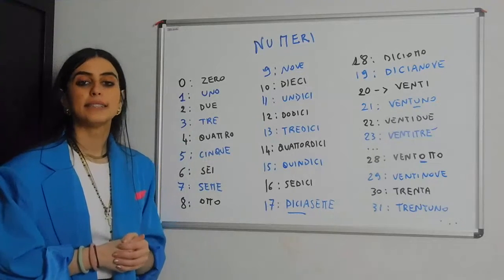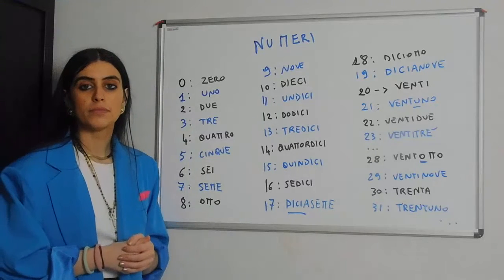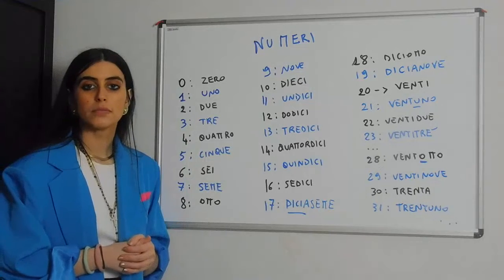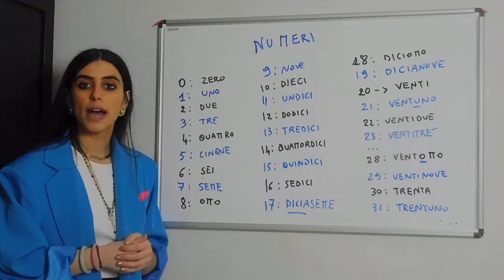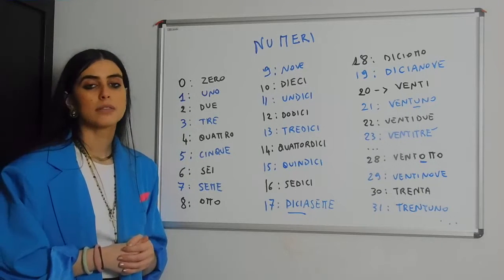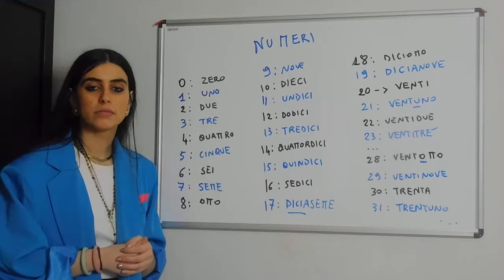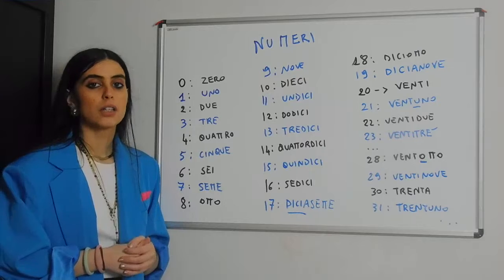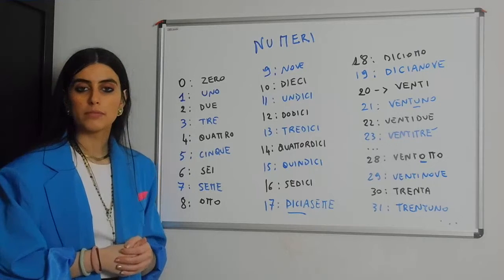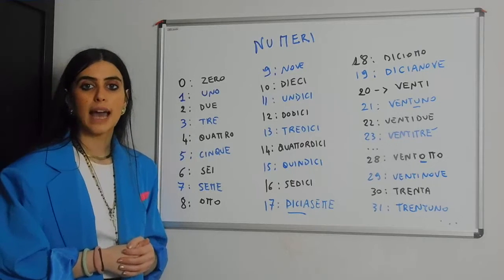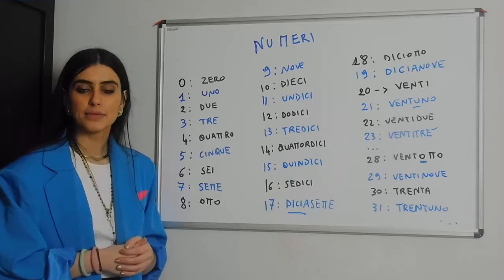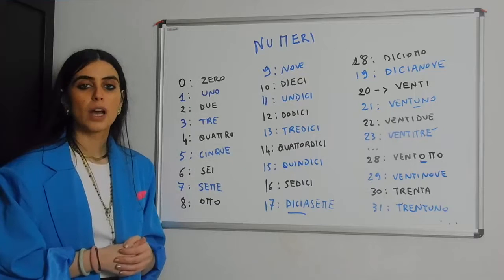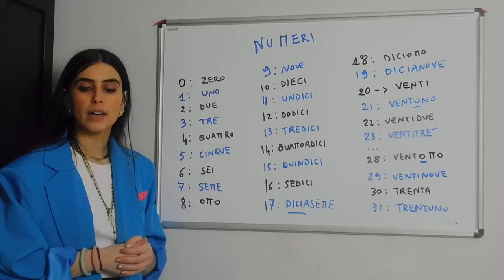We have: zero, uno, due, tre, quattro, cinque, sei, sette, otto, nove, dieci.